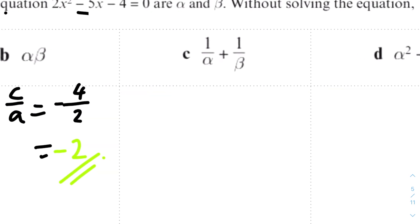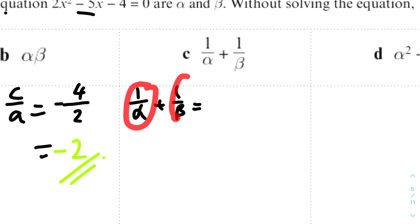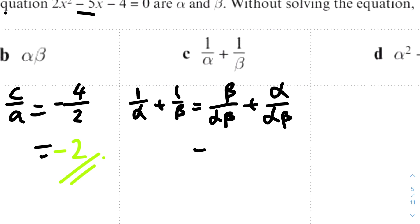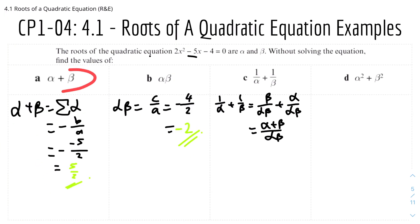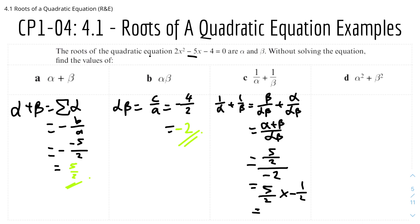For part c, 1 over alpha plus 1 over beta. We simplify by making the denominators the same — multiplying left by beta and right by alpha — giving beta over alpha·beta plus alpha over alpha·beta, which equals (alpha plus beta) over (alpha times beta). We know alpha plus beta equals 5 over 2 and alpha·beta equals minus 2, so this is (5 over 2) divided by (minus 2), which equals minus 5 over 4.